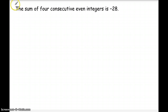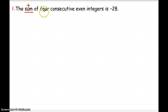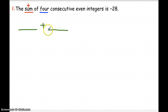Let's look at problem one on your paper. It says the sum of four consecutive even integers is negative 28. We've got to break this down. The first word I see is 'sum' — the sum is the answer to an addition problem, so I know I'm going to be adding some numbers together. Since I know I'm going to be adding four numbers together, there's the first number plus the second number plus the third number plus the fourth number, and we will fill these in as we go.